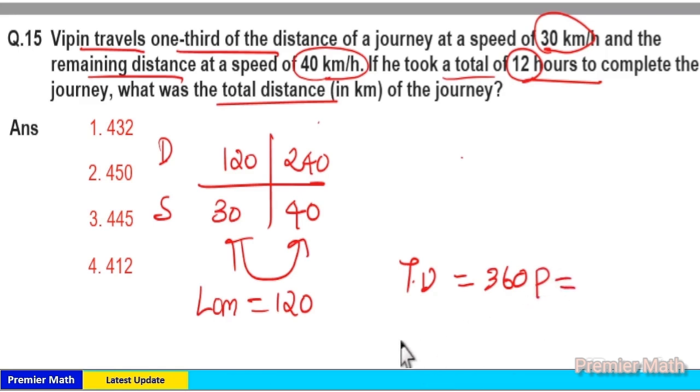Here, total time from this diagram is equal to 120 divided by 30, which is 4 part hours, and 240 divided by 40, which is 6 part hours. So 4 plus 6 equals 10 parts is the total time.